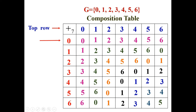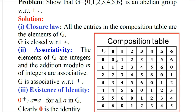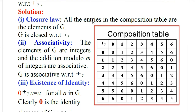Using this table we can prove all the axioms. Closure law: all the entries in the composition table are elements of G. Since G has 7 elements (0 to 6), the table is a 7×7 square matrix consisting of 49 elements. All 49 elements are from 0 to 6, so all entries are elements of G. Therefore, G is closed with respect to addition modulo 7.